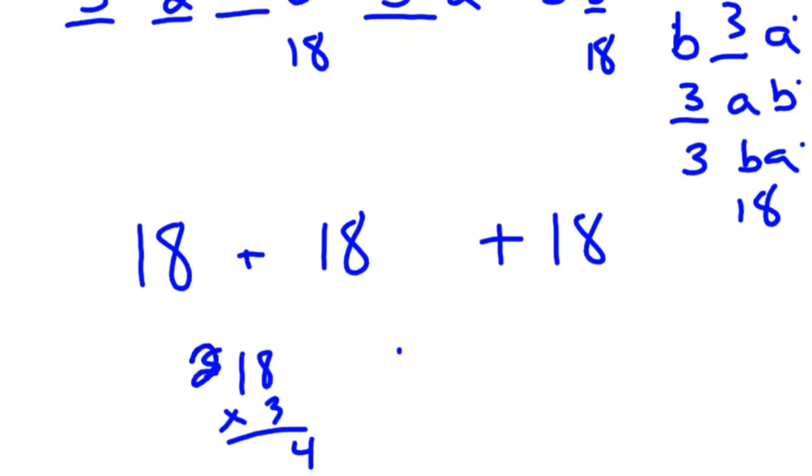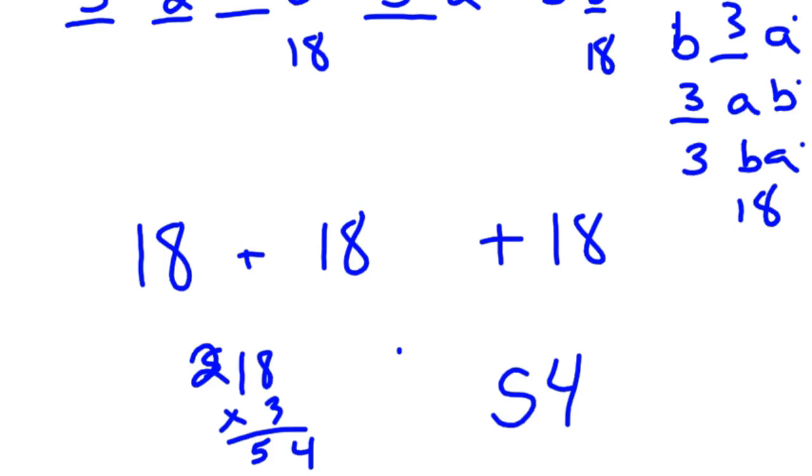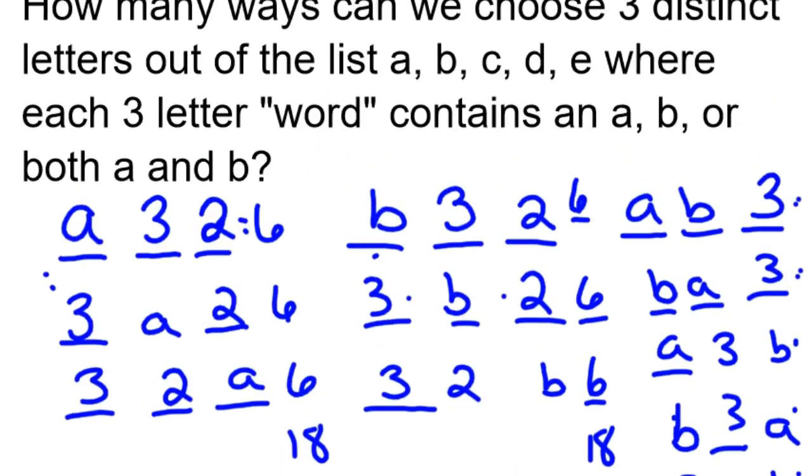Eighteen times three, I think, is fifty-four. So there's fifty-four ways that we could choose three distinct letters where you either have an a, a b, or both a and b.